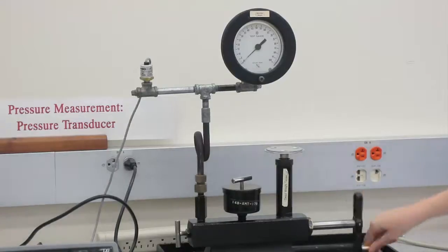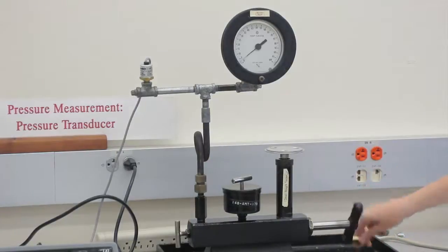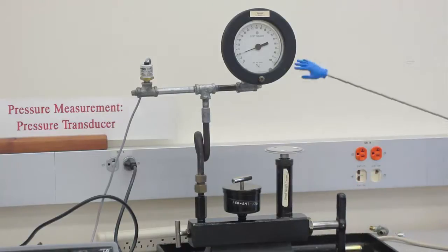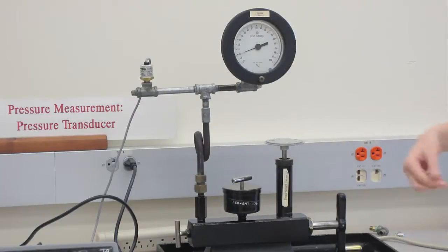Now we're ready to prepare the dead weight tester. With no weight added, crank the hand wheel so the Bordon gauge reads about 10 psi. Give the weight platform a gentle push and a short spin.